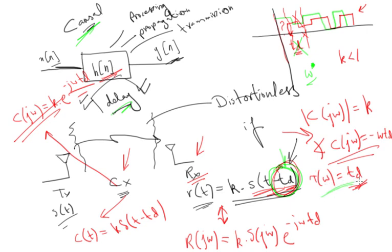You can conclude linear phase is desirable and non-linear phase is not. For example, if the phase is ω²·td instead of linear, then the group delay will be a function of ω, making it difficult for the receiver to extract the message s of t. So linear phase systems are desirable. It is particularly desirable to design systems to have exactly or approximately linear phase.